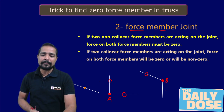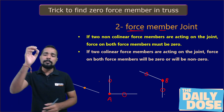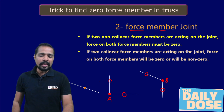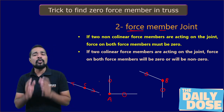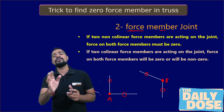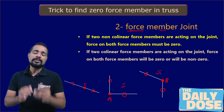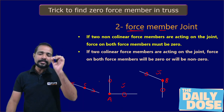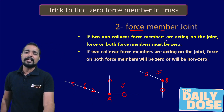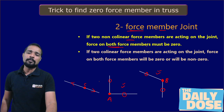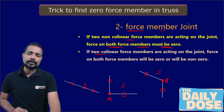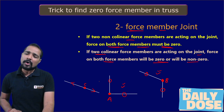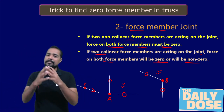If two non-collinear force members are acting at a joint, then the force on both members must be zero. But if at any joint — say joint C — you see two members that are collinear, then they might or might not be zero. Whenever two non-collinear force members meet at a joint, they must carry zero force. When two collinear force members are acting at a joint, the force on both members may or may not be zero — it depends on the condition.